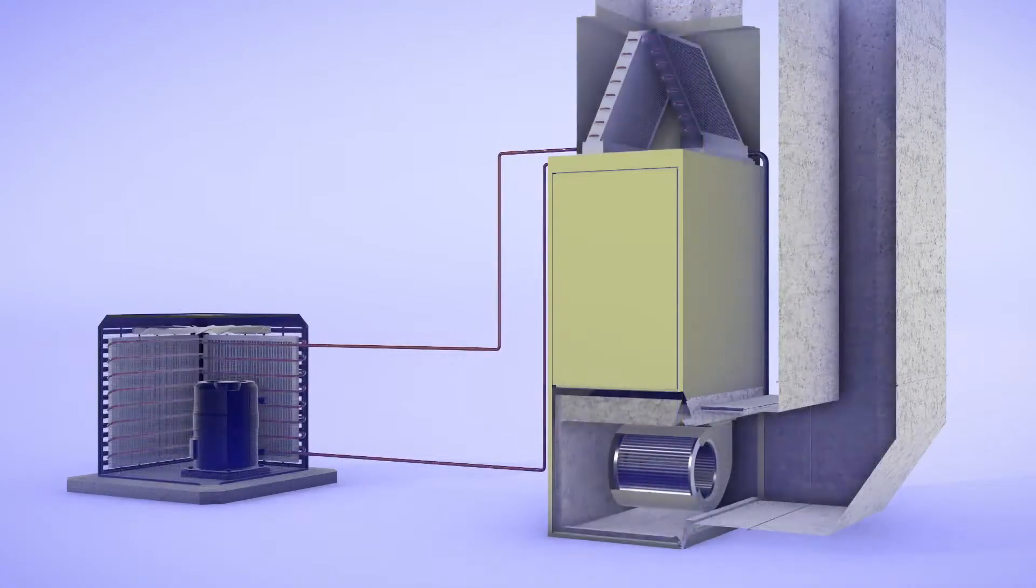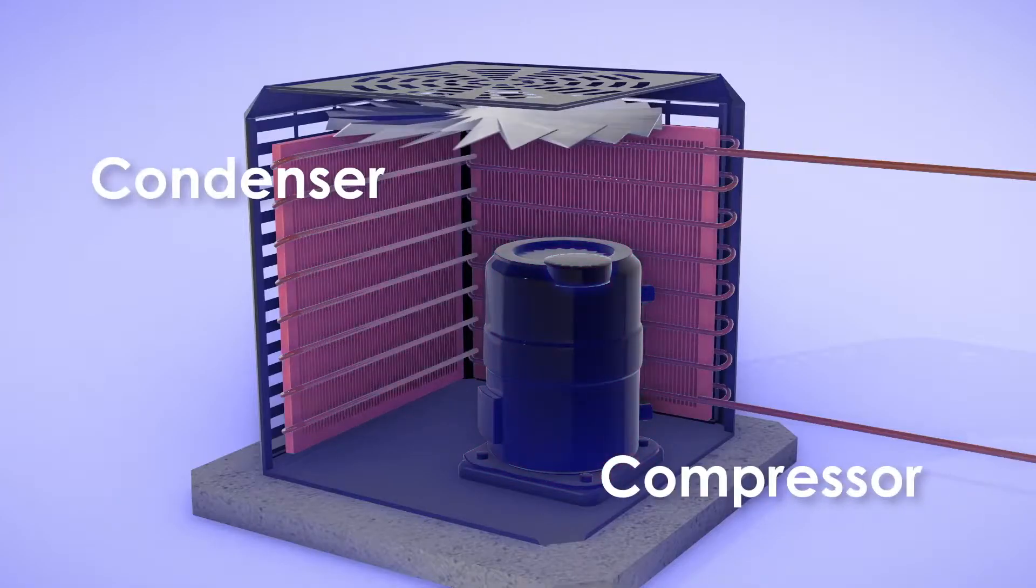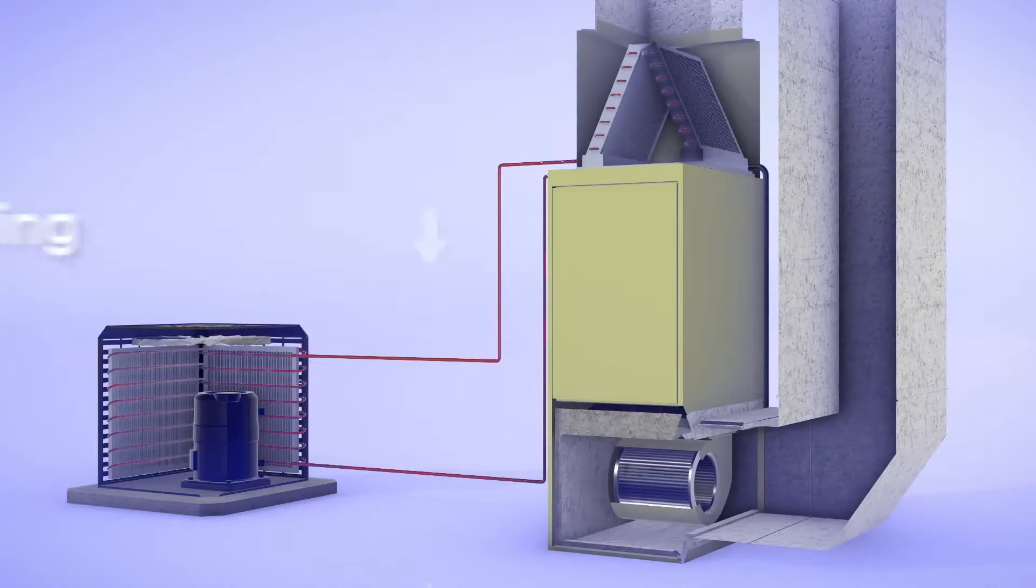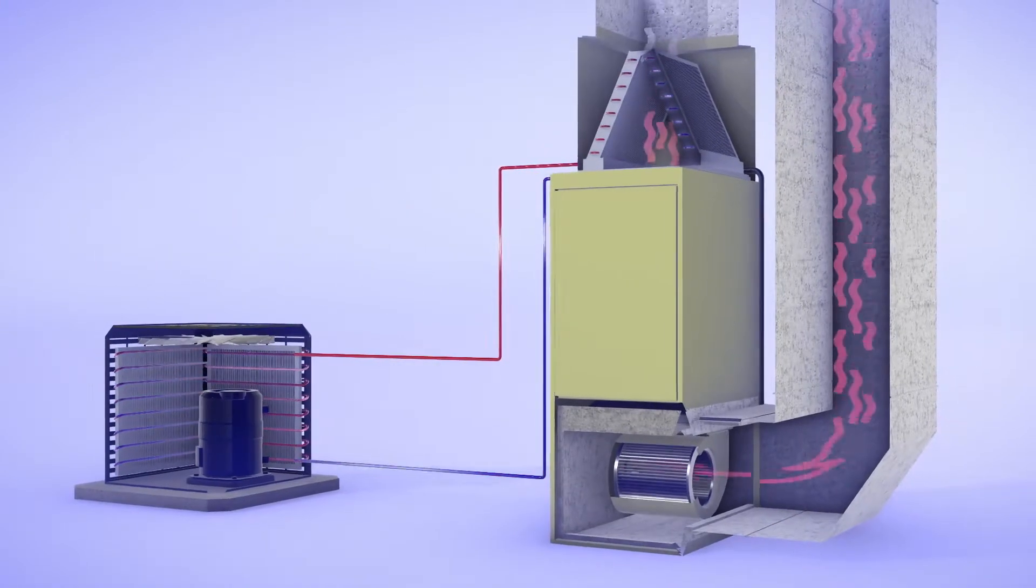Your AC unit is made up of three key components: the compressor and the condenser, both located outside the home, and the evaporator coil, mounted to the furnace inside the home. Copper piping connects the inside and outside units, which contains refrigerant.